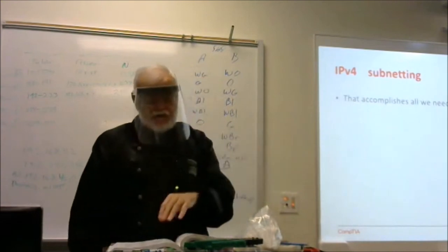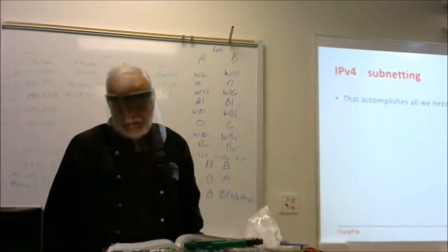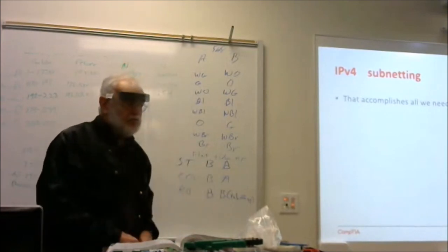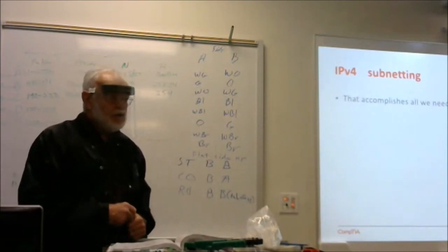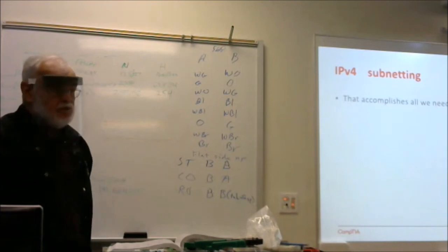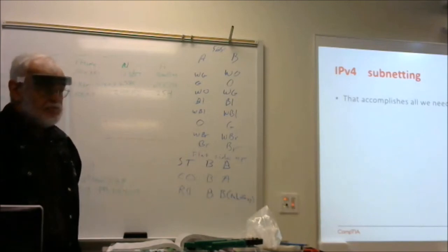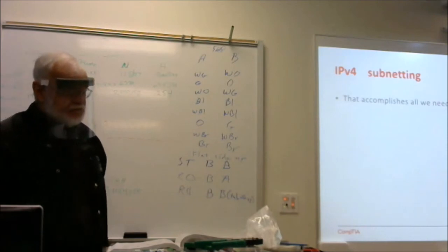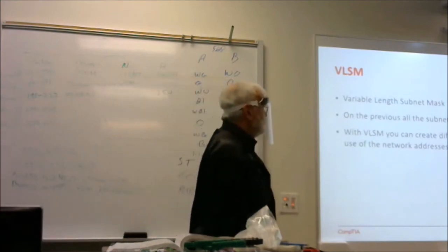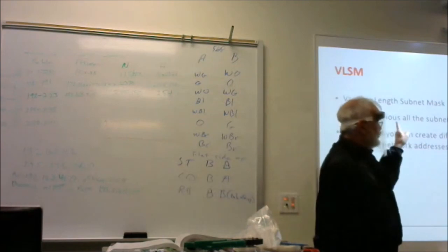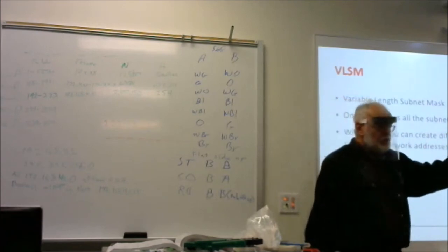Now I'm going to cover the last bit from the chapter — the last couple of pages — which talks about VLSM: Variable Length Subnet Masking. It's only two pages at the very end of the chapter. It's not going to be heavily tested, but it's mentioned, so I want to touch on it. You just need to know it exists and what it does.